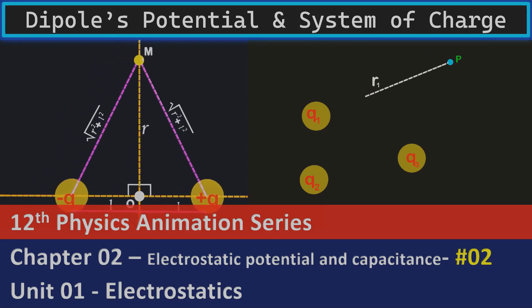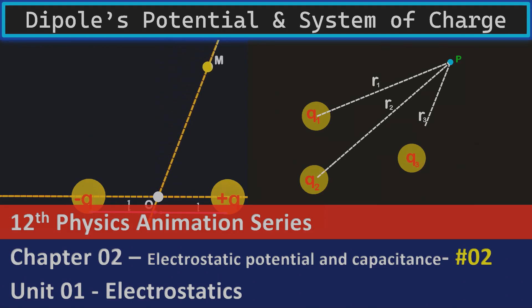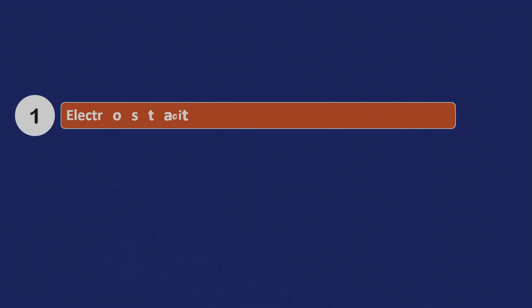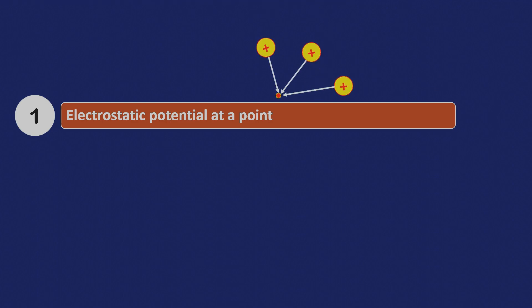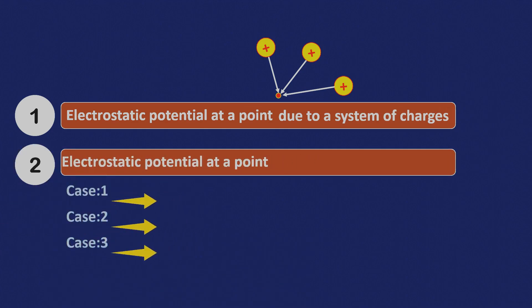Hello friends, welcome back to 12th physics animation series. In the previous video, we dove deep into the concept of electric potential and potential difference, learning how much electric potential a point charge generates at a specific point in space. In today's video, we will begin by exploring how the electric potential at a point is affected by the presence of multiple point charges, often referred to as a system of charges. Then we will shift our focus to the electric potential at various positions of an electric dipole.